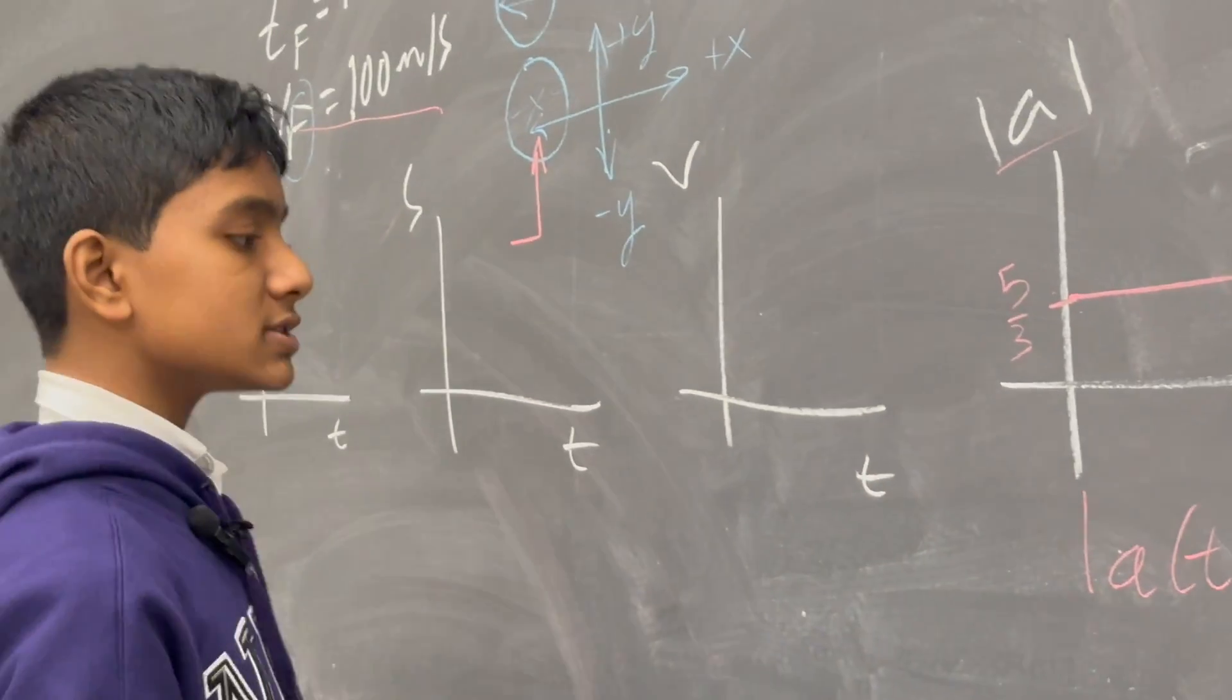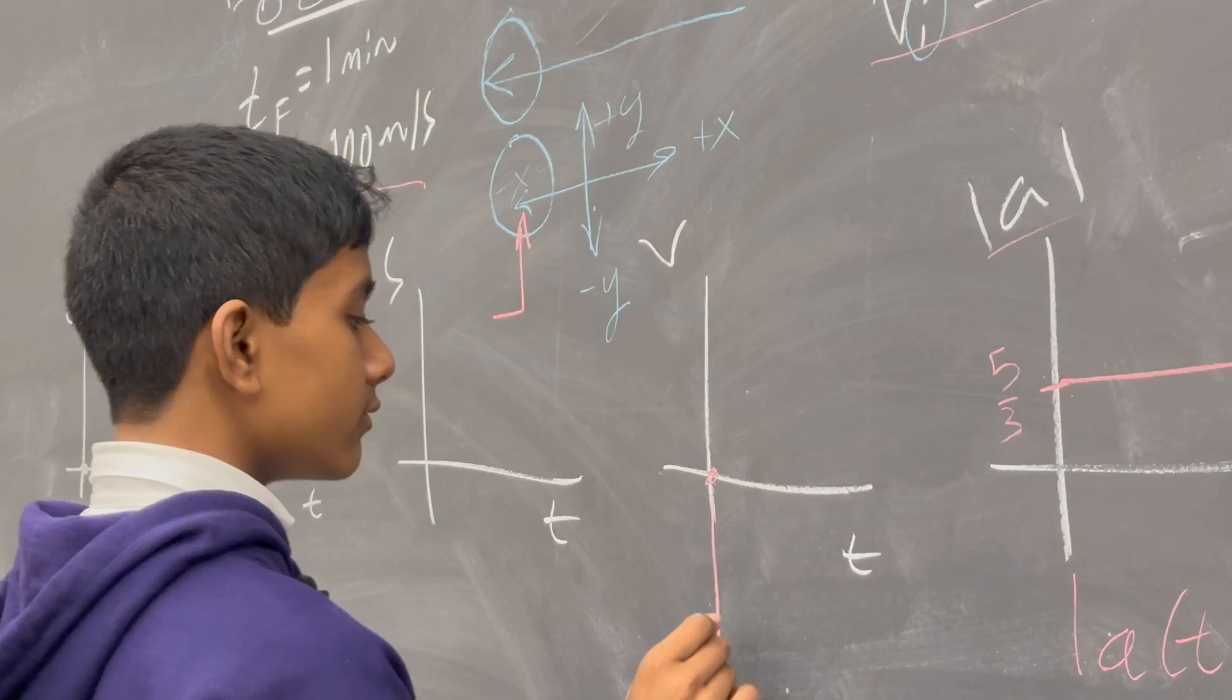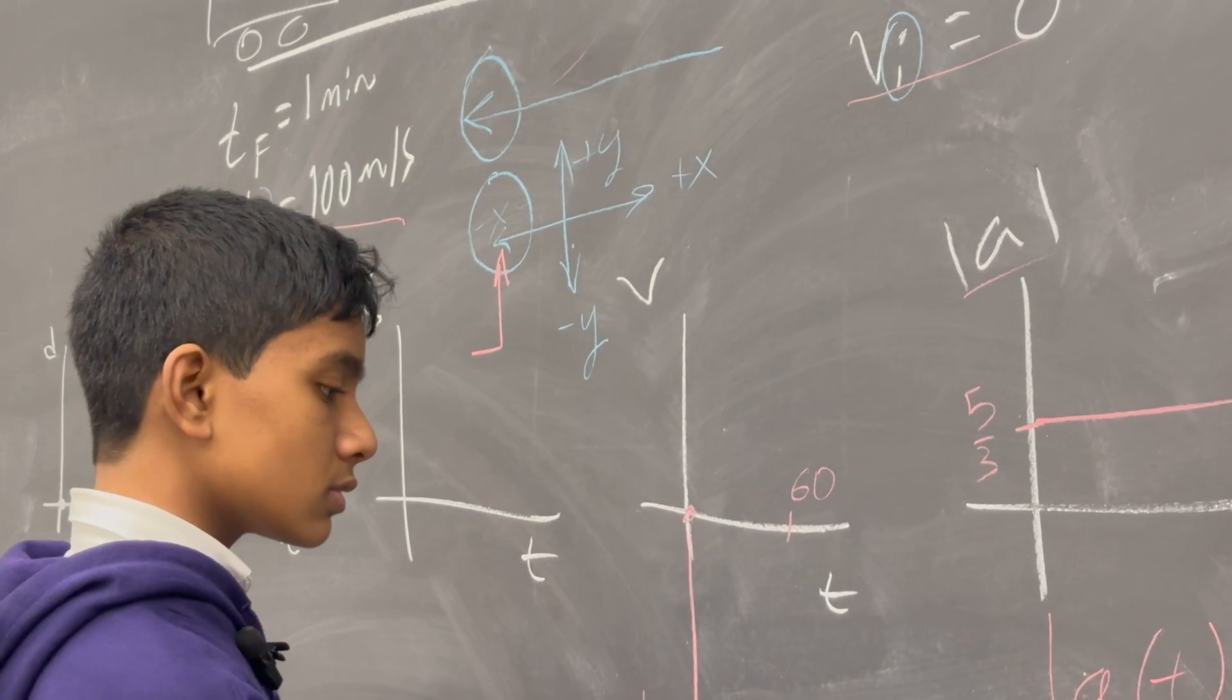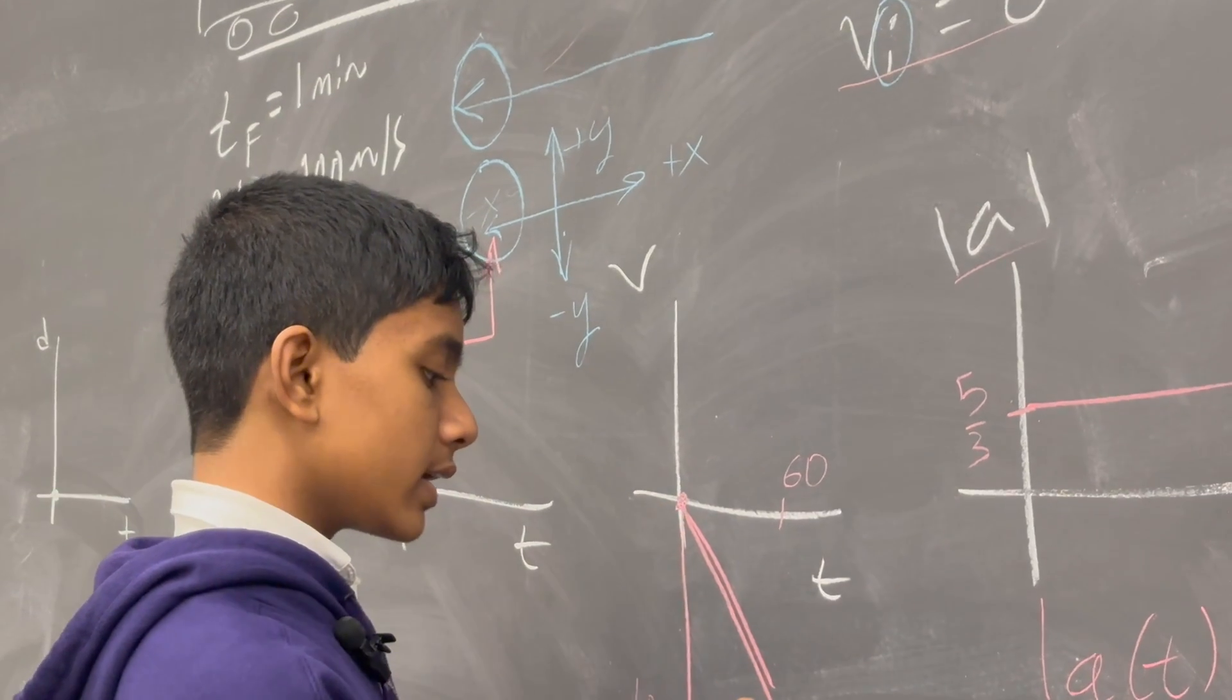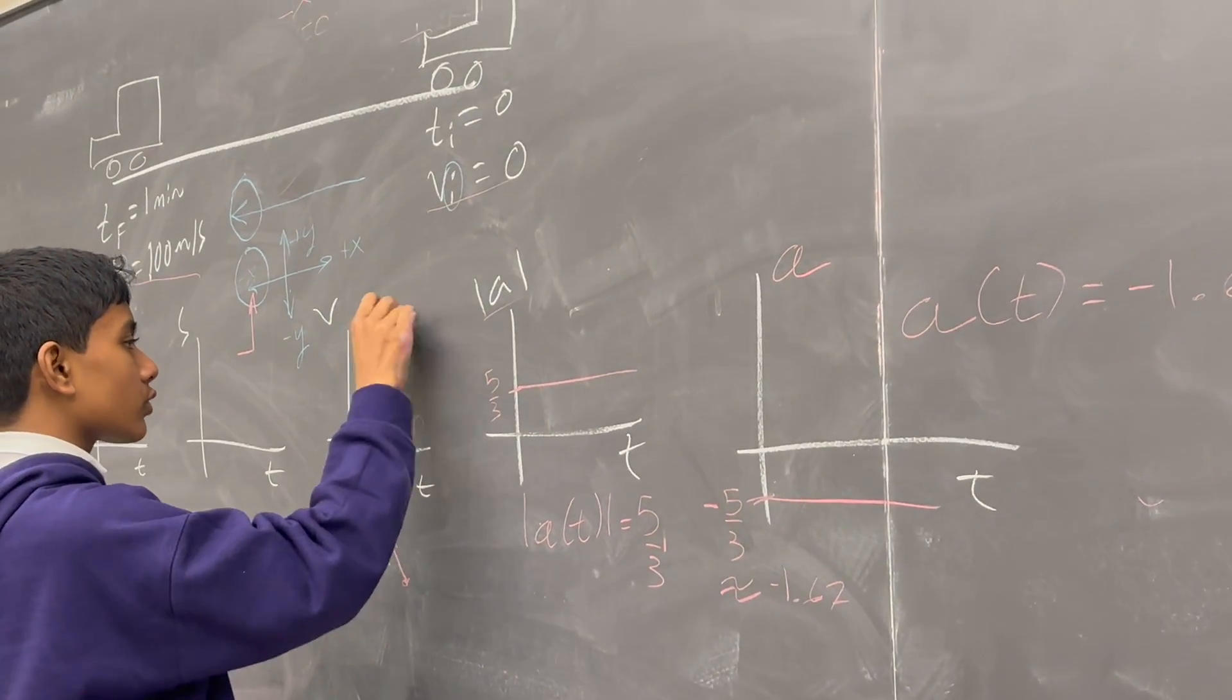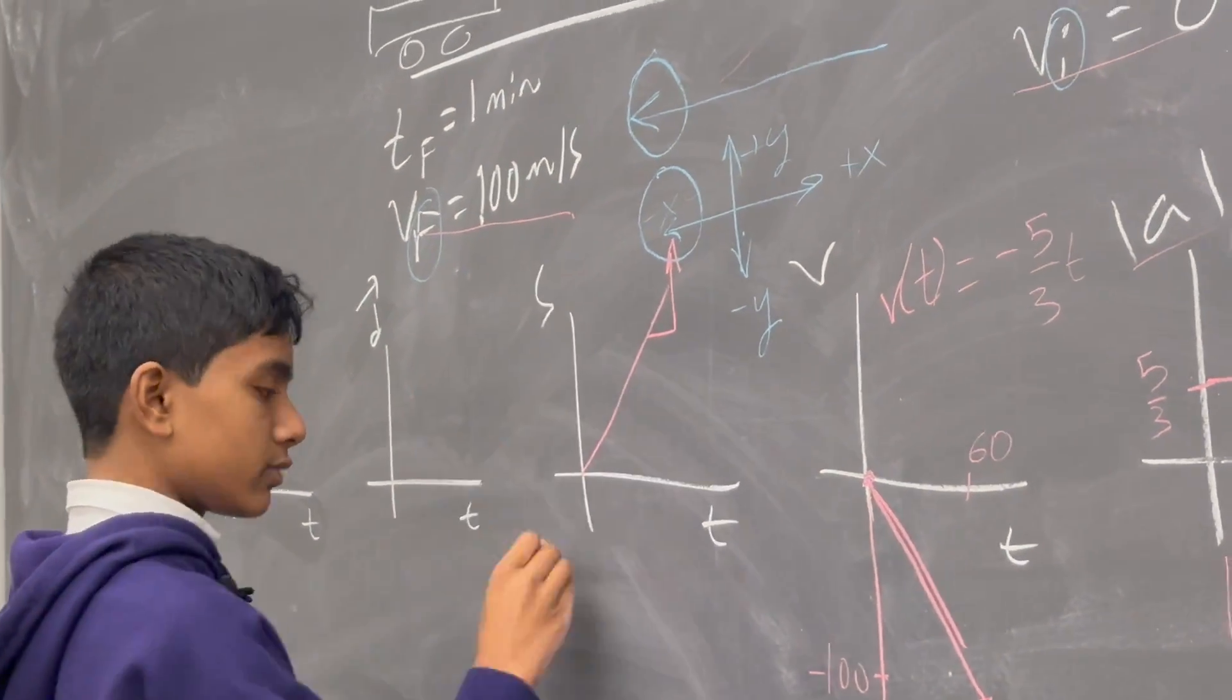Now the velocity is constantly increasing from a value of 0 comma 0, and since it's going into the negatives, to a value of 60 comma minus 100, like that. So we draw a line, but what's the slope of this line? Well of course it's just the acceleration, which is minus 5 over 3. So v of t is minus 5 over 3t. And of course the speed is just the magnitude of that, so it's going to be plus 5 over 3t.